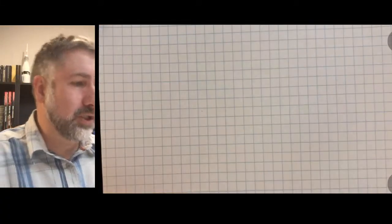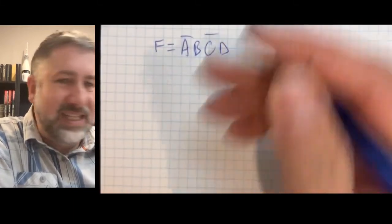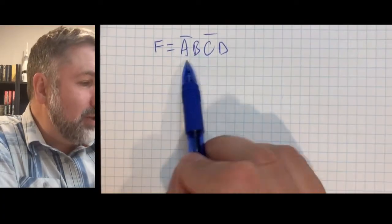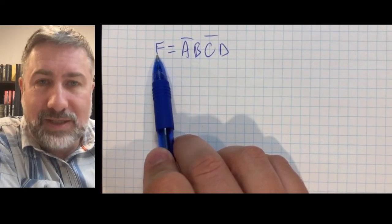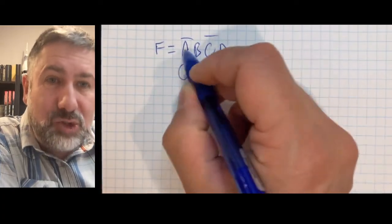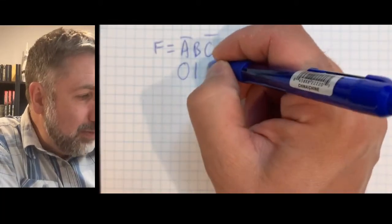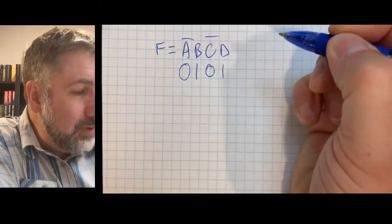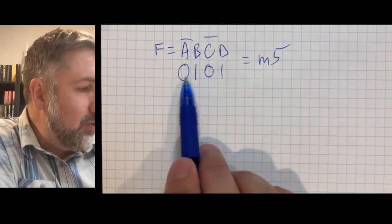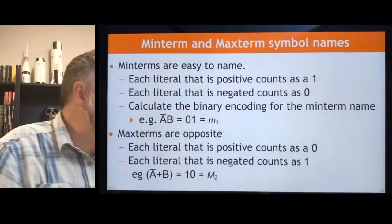Let's take a four-input function example. Some function f equals a prime b c prime d — that's the entire function. What min term is represented? There's only one min term because it has a literal for every variable. We're looking for when this term is 1: for a prime to be 1, a must be 0; b must be 1; for c prime to be 1, c must be 0; d must be 1. So this is 0,1,0,1 — min term 5 — because 0,1,0,1 is the binary encoding for 5 (1 + 4 = 5).